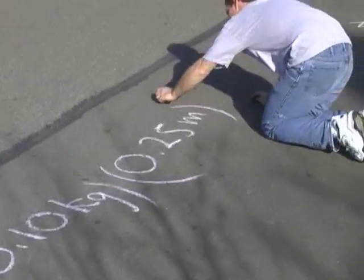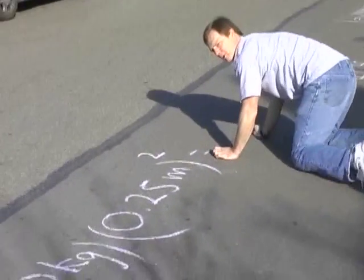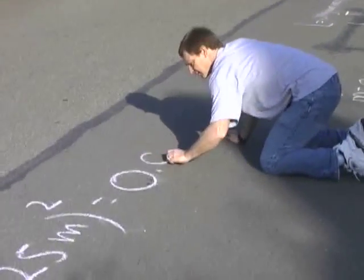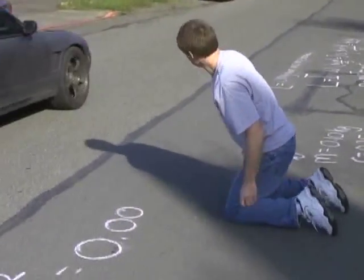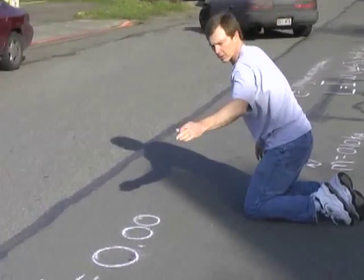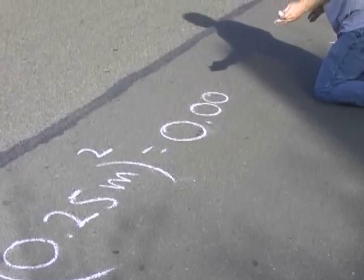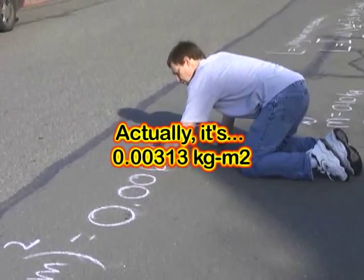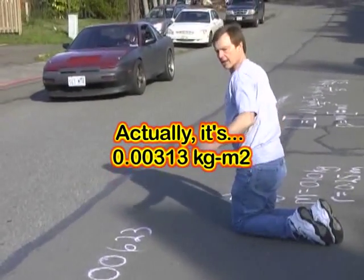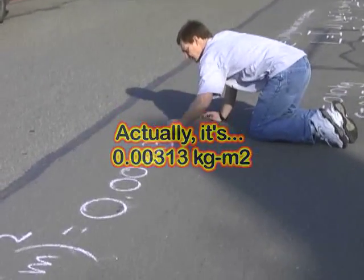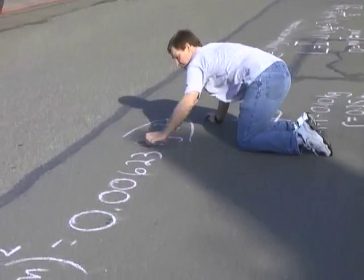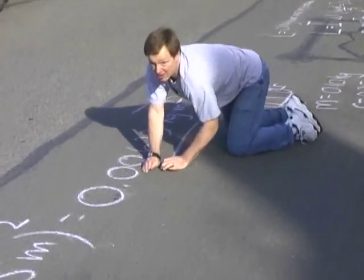And that's squared. That's going to be 0.0125 — 0.00625. Let's see: 3 sig figs. And that's going to be kilogram meters squared. OK, that's the first part. Check my numbers — I don't have a calculator on me.